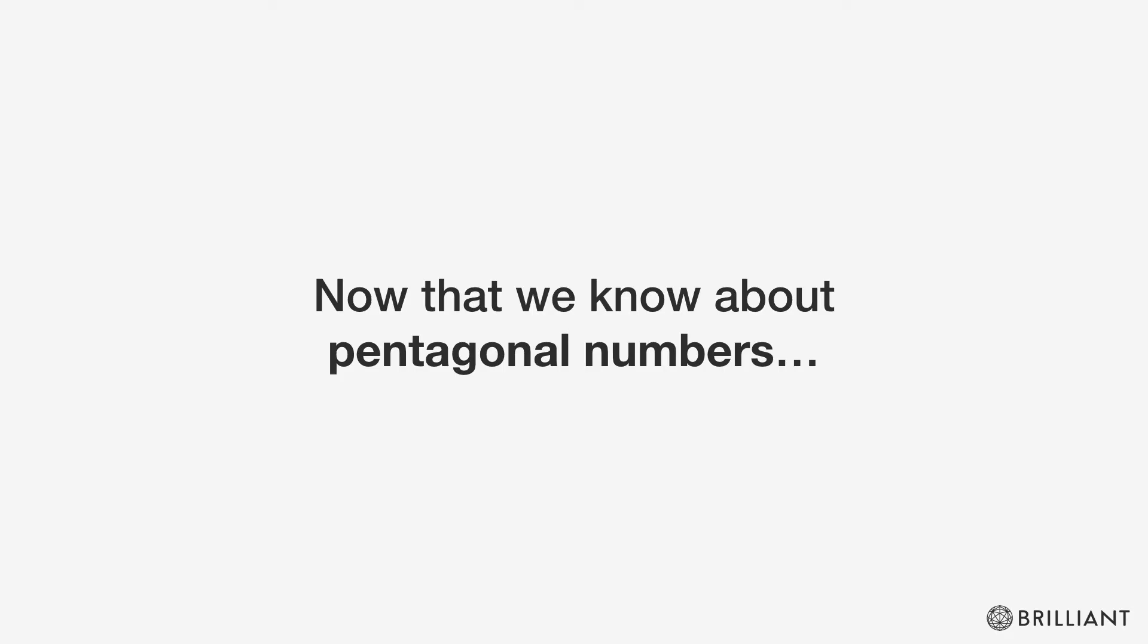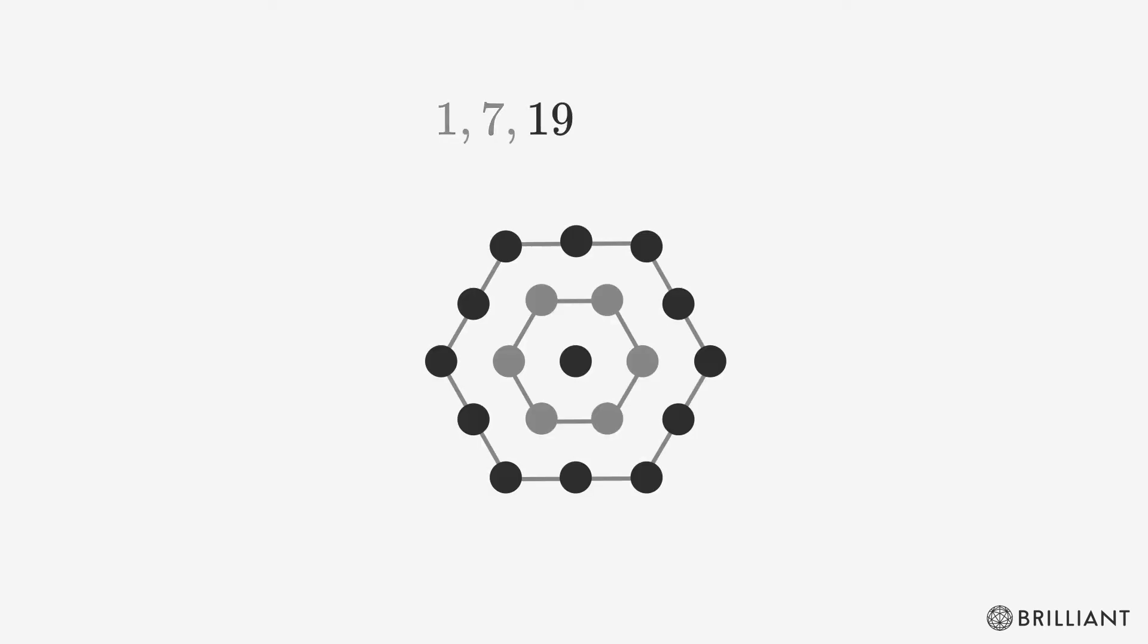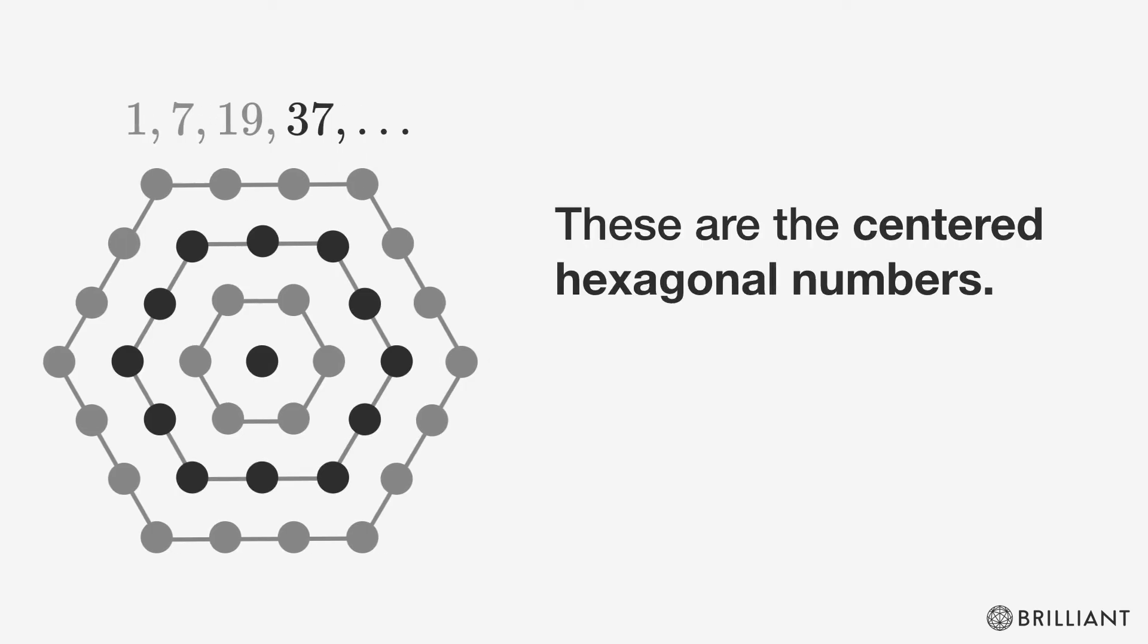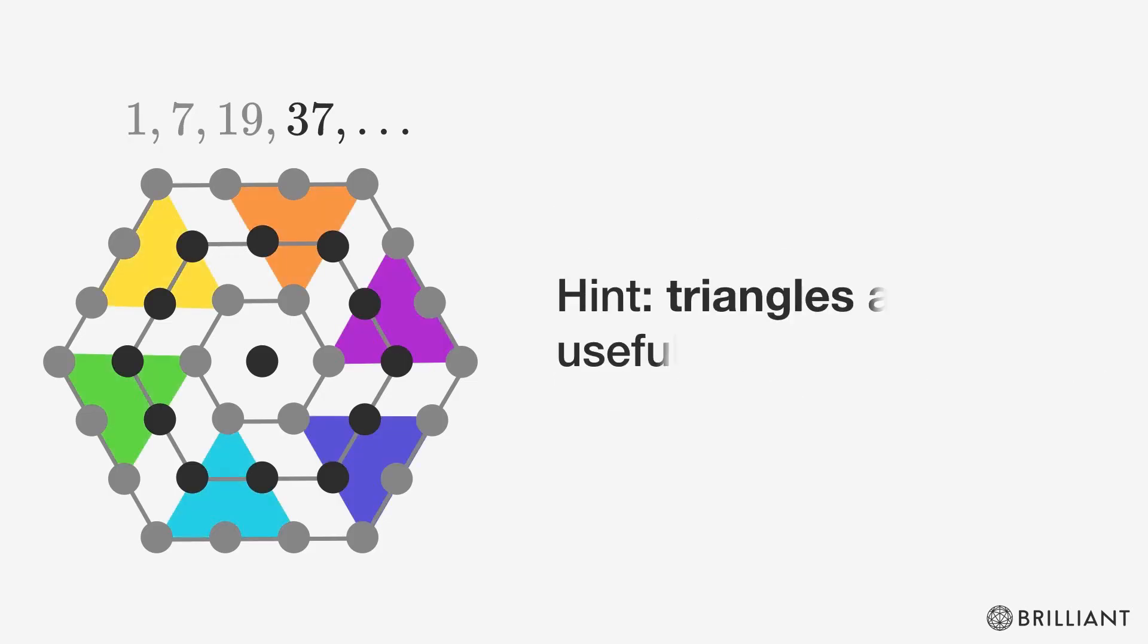Now that we know about pentagonal numbers, we're ready to look at centered hexagonal numbers. These begin with 1, 7, 19, 37. As you might expect, we can visually represent them with hexagons. What is the sixth centered hexagonal number? Triangles are useful here too.